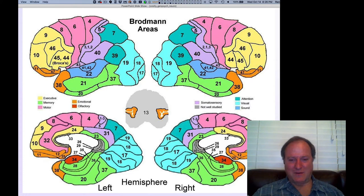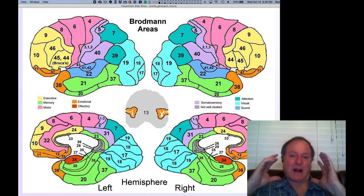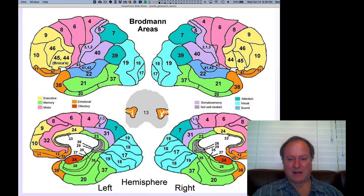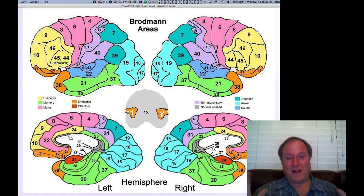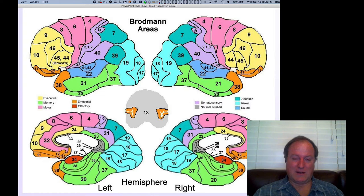This area here that's labeled as not well studied ends up being really critical for understanding how we systematically organize our representations of events in the world. It's called the retrosplenial cortex. You won't be tested on any of these areas. Don't worry, you don't have to memorize the Brodmann's areas. Just kind of pointing it out for future reference that there are these large number of dissociable sub-areas of the cortex.